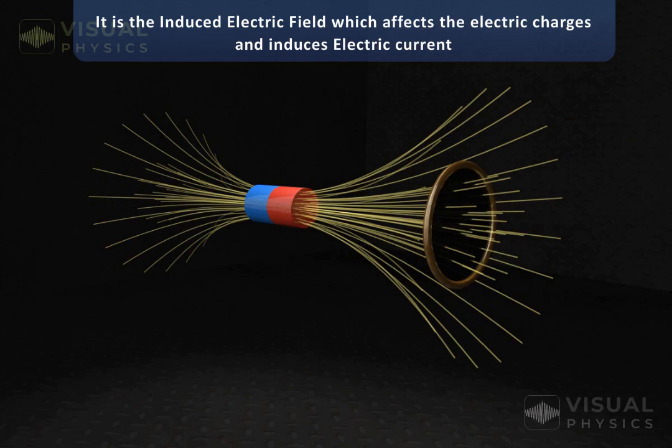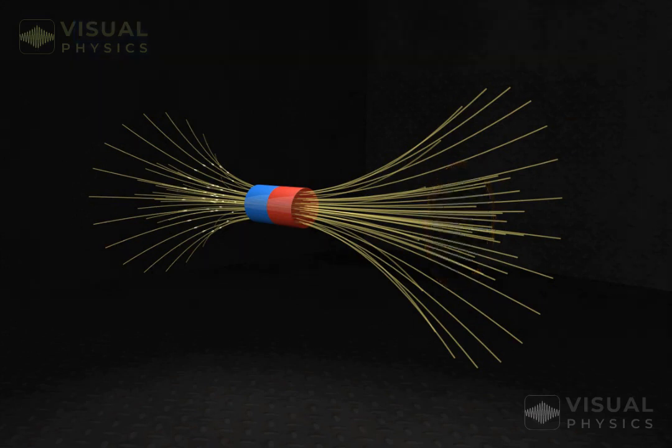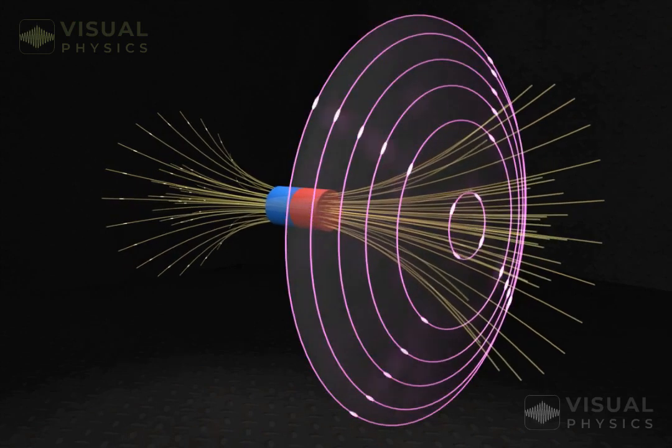Note that induced electric field does not depend on the presence of a conducting ring or coil. Even if there is no coil, electric field is induced in space because of the changing magnetic field.